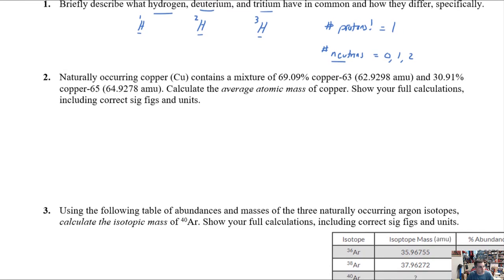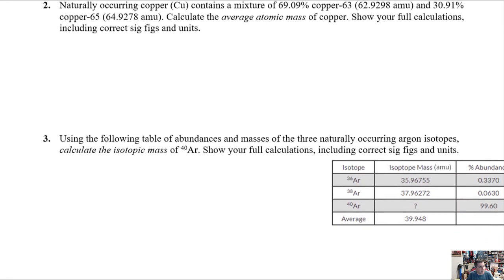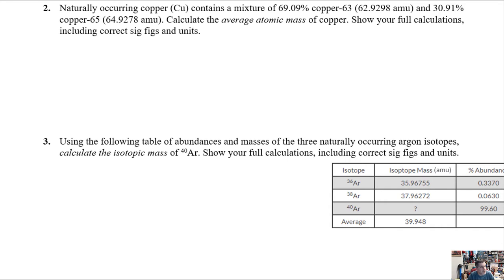All right, so if we now dig into a little bit more of a calculation-based question, we can see here we've got a naturally occurring isotope of copper. You've got a mixture of two different isotopes here. You've got copper 63, about 69% abundant, and then you've got copper 65, that's about 31% abundant, and it's going to ask you to actually go ahead and determine the average atomic mass of copper and show your calculations, sig figs, and units.